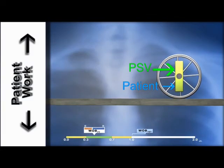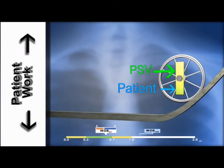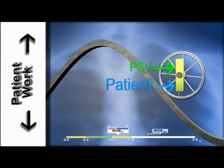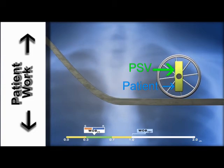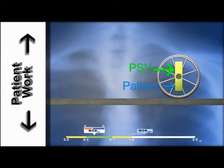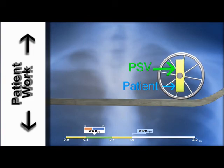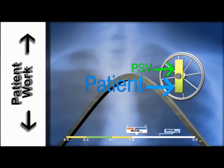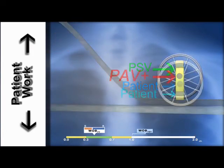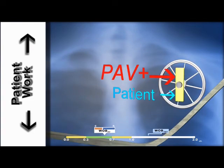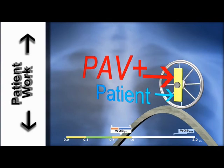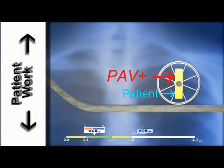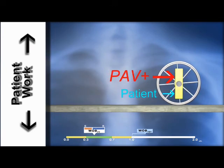Mechanically ventilated patients will face a number of variables that will increase their workload, such as metabolic changes, anxiety, temperature, and pain. Note that with pressure support in the face of a changing environment, the preset pressure is unchanging and the balance of work is shifted to the patient, as illustrated by changes in font size of the letters. PAV Plus will, however, increase its support concurrently. With PAV Plus, the more the patient pulls, the more support he will get. Patients will get exactly the amount of support that they need, when they need it.